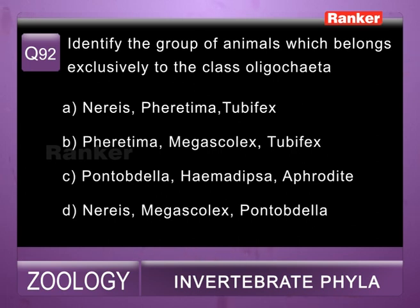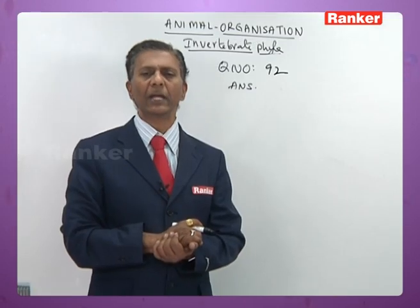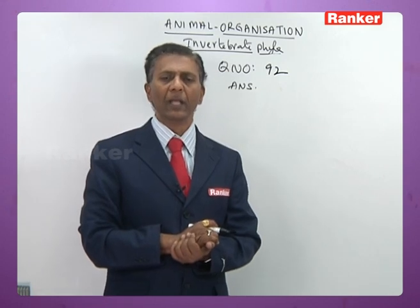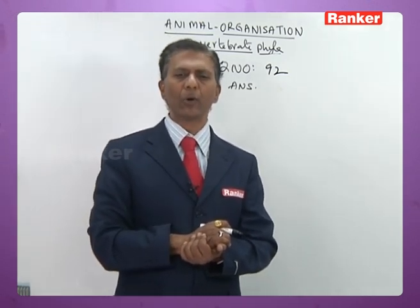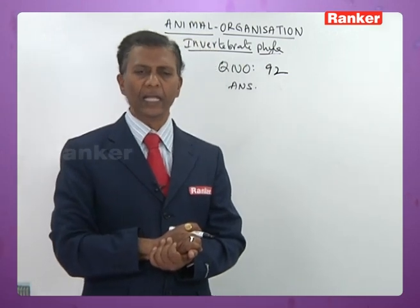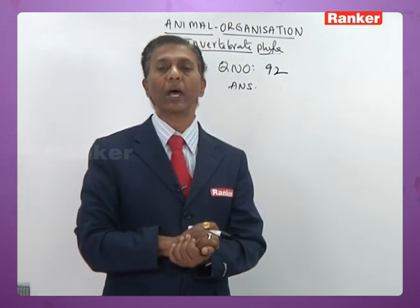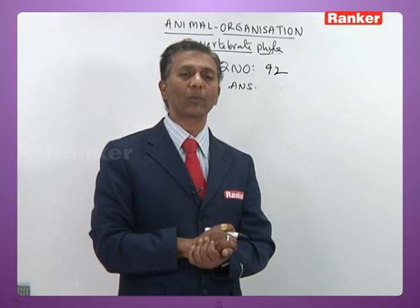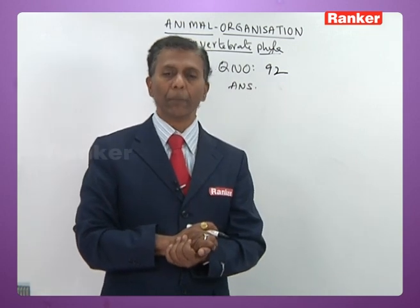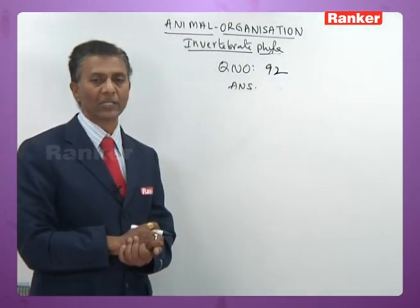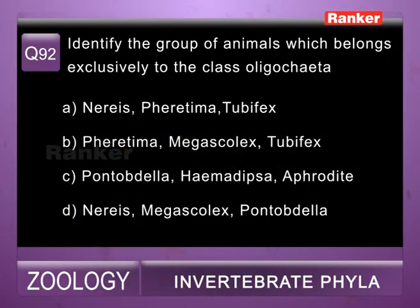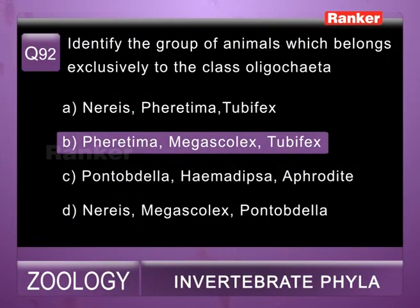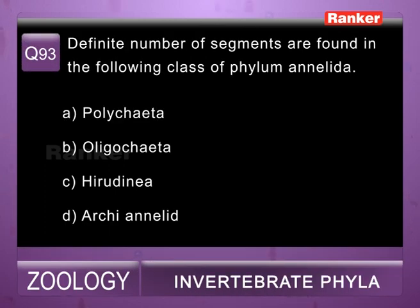Question ninety-two: identify the group belonging exclusively to class Oligochaeta — a) Nereis, Pheretima, Tubifex (wrong), b) Pheretima, Megascolex, Tubifex (correct — all Oligochaeta), c) Pontobdella, Haemadipsa, Aphrodite (wrong), d) Nereis, Megascolex, Pontobdella (wrong). So ninety-second question correct answer is b.